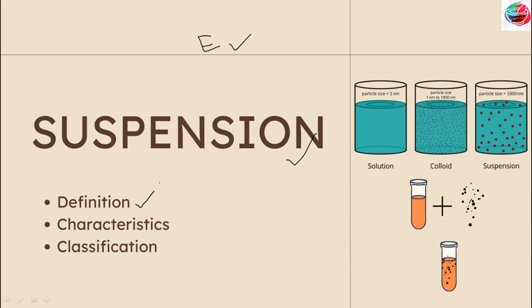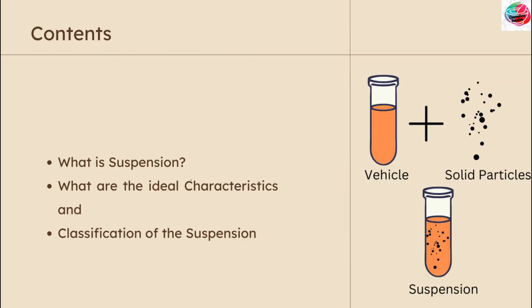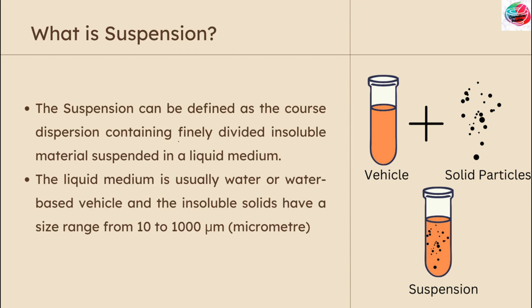We are going to see what is suspension, what are the ideal characteristics, and classification of the suspension. Suspension can be classified as a coarse dispersion containing finely divided insoluble material suspended in a liquid medium. The liquid medium is usually water or a water-based vehicle, and insoluble solids have a size range from 10 to 1000 micrometers.